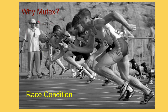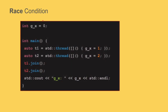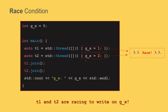Why do we need mutex? One of the main reasons is something called race condition. Race condition happens when two or more threads are competing to access a shared resource. For example, two threads — thread one and thread two — are trying to write inside a shared variable g_x. One wants to write value one, the other value two. So t1 and t2 are racing to write inside g_x, and at the end we don't really know what the value would be.